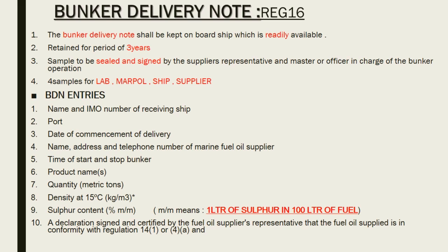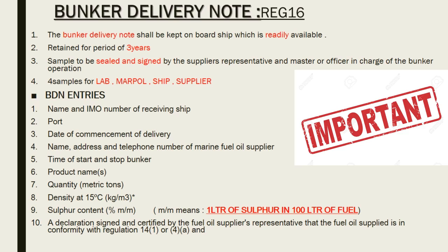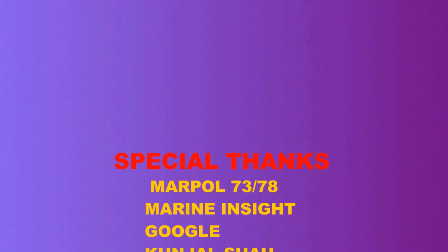The last point of Annexure 6 is the Bunker Delivery Note, which comes under fuel quality. The bunker delivery note shall be kept on the ship, readily available for inspection, for a period of 3 years. The sample should be sealed and signed by the supplier's representative and the master or officer in charge of the bunker operation. Four samples are taken: one given to the lab, one for MARPOL, one for the ship, and one for the supplier. The most important entries in the bunker delivery note include: address and telephone number of the marine fuel oil supplier, time of start and stop of bunkering, product name, quantity, density at 15°C, sulfur content, and a declaration signed and certified by the fuel oil supplier's representative.